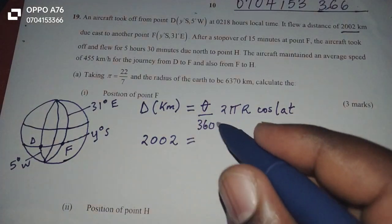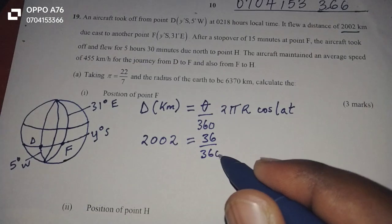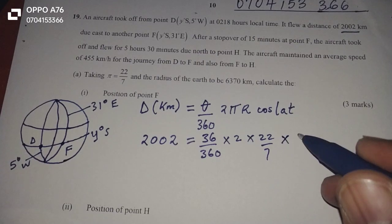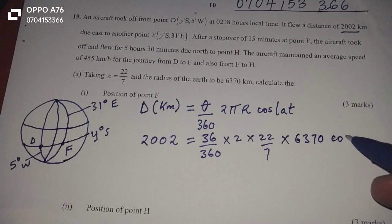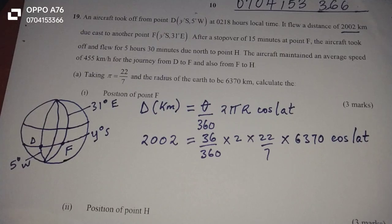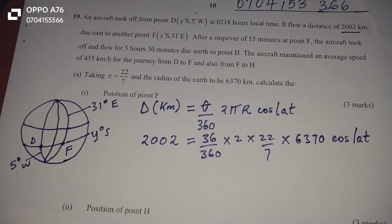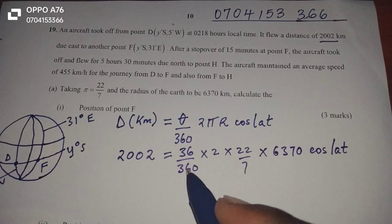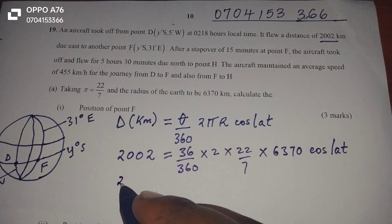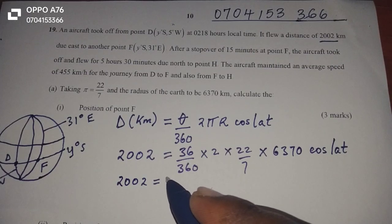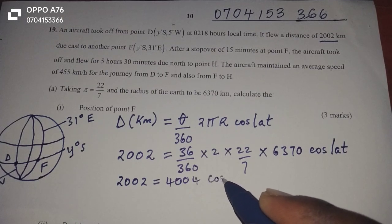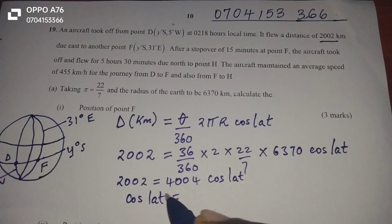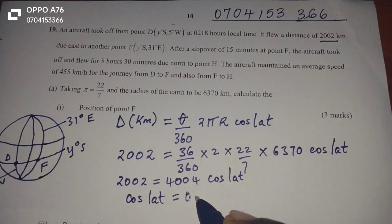We need 5 plus 31, giving us 36, divided by 360, multiplied by 2, multiplied by 22/7, multiplied by R 6,370, cosine of Y. When we compute the right-hand side, we get 2,002 equals 4,004 cosine Y, which means cosine Y equals 2,002 divided by 4,004, giving us 0.5.